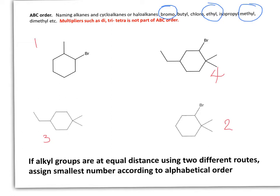If we look at the first structure, this one has a methyl group. Every time that you see a line like this, these are methyl groups. So this one has two methyl groups, and this one also has two methyl group substituents.